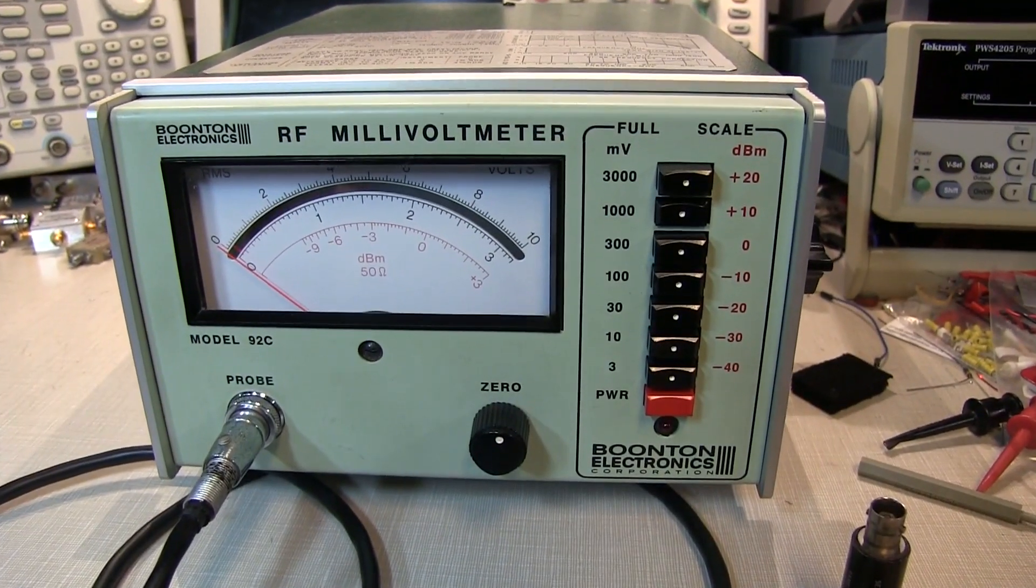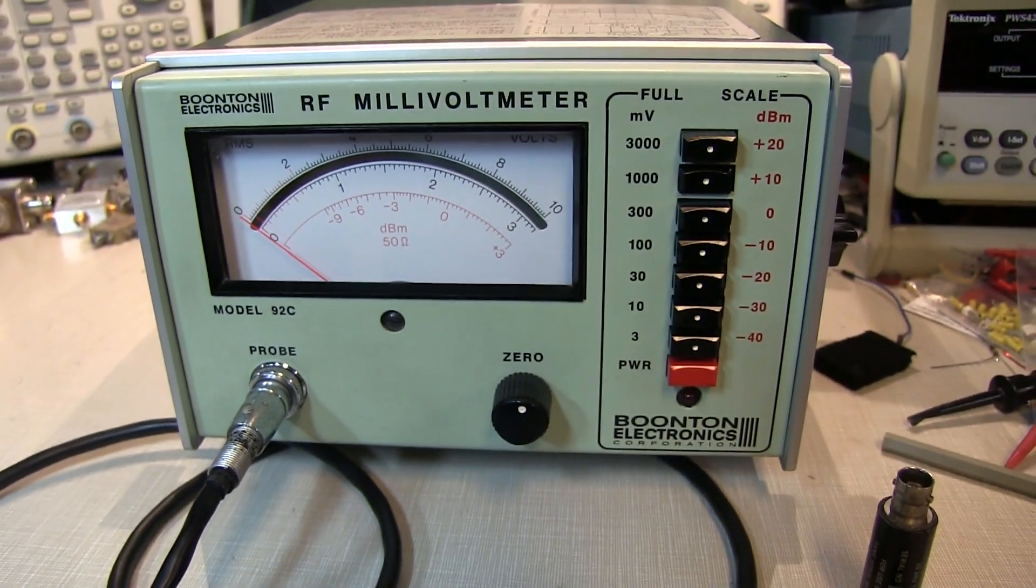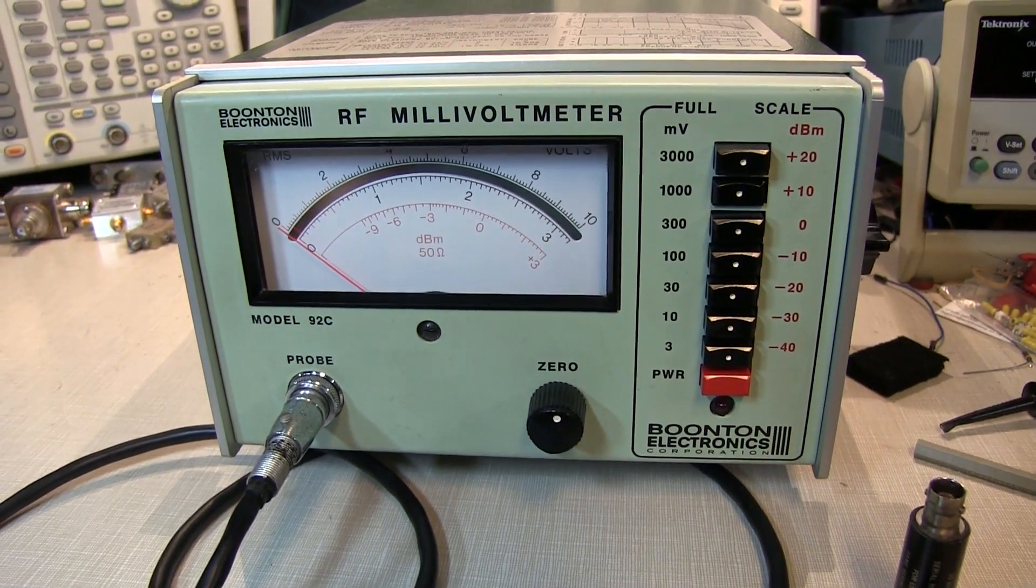This meter is a Boonton Electronics Model 92C, made right here in Boonton, New Jersey, only about a half an hour from where I live.